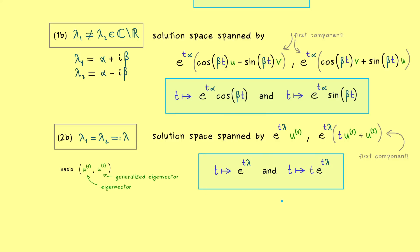And there we have it — this is the whole result. You can now solve every autonomous second-order linear ODE. Just calculate the zeros of the characteristic polynomial, check which of the three cases applies, and you immediately know the two functions that span the whole solution space. Having the whole solution space means you can solve every initial value problem. That's good enough for today — see you in the next video. Bye-bye.